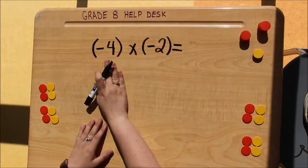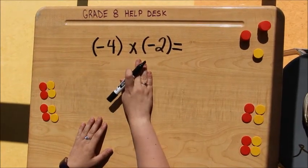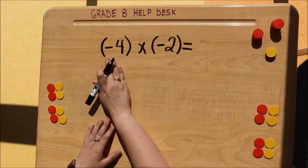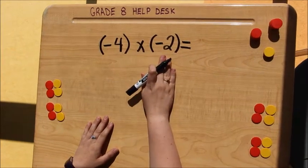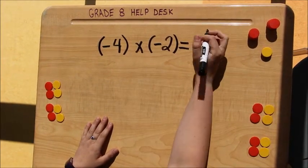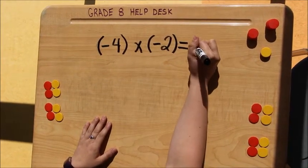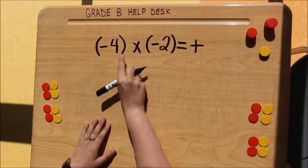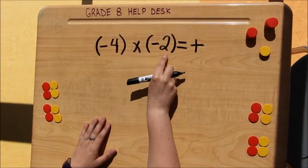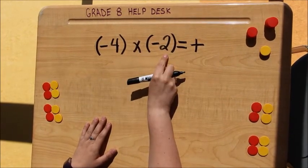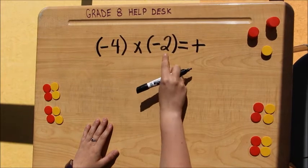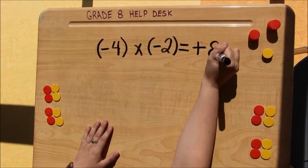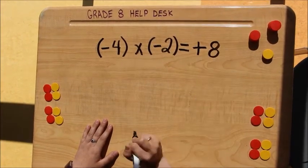Here we have negative 4 times negative 2. I have two signs and they're both negative, so that means our answer is going to be a positive. I have 4 times 2, or 4 groups of 2, which equals 8.